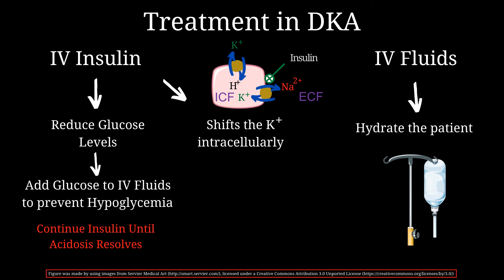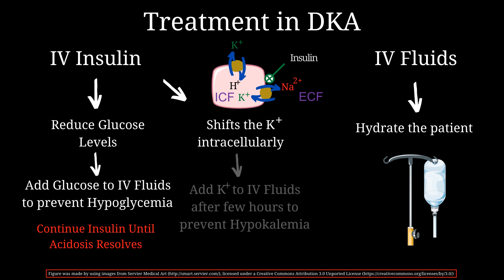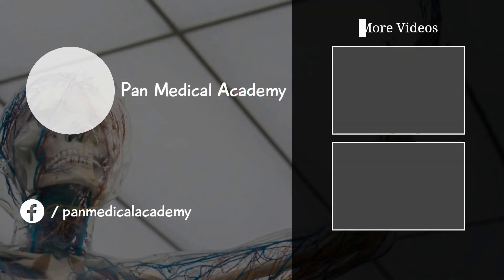Additionally, insulin rapidly shifts potassium from the extracellular compartment to the intracellular compartment. Since total body potassium levels are already low — as potassium was constantly being filtered by the kidneys — after administering insulin it is possible to develop hypokalemia. To prevent this, potassium must also be added to IV fluids a few hours after starting therapy.